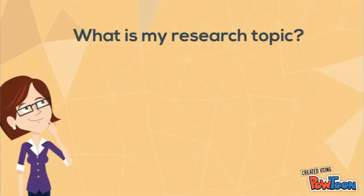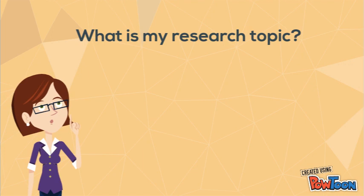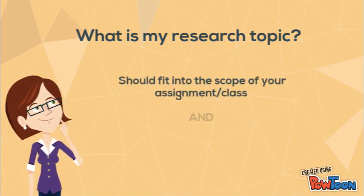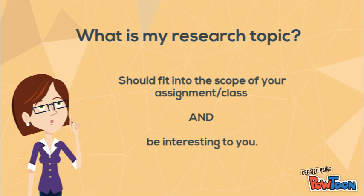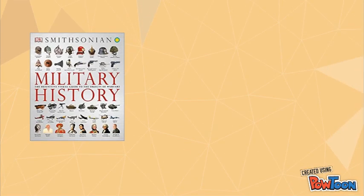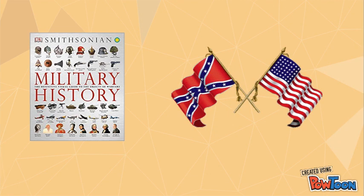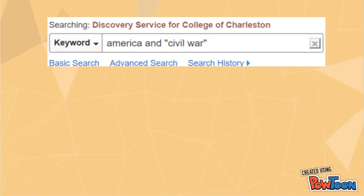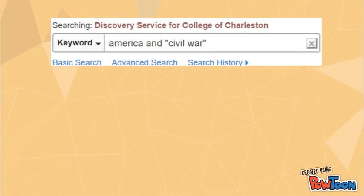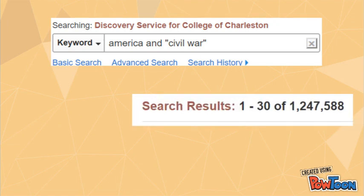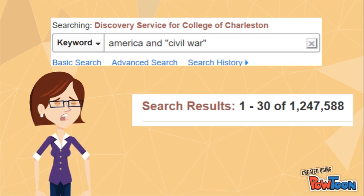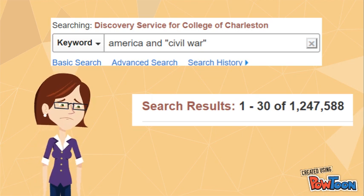The first thing that should be considered is what our research topic should be. This may be defined based on what the research assignment is, but it should also be something that interests you. For example, in a military history class for a final paper, I want to write about the Civil War because I am interested in American history. While this topic interests me personally and is relevant to my class, searching the American Civil War will probably yield far too many results.